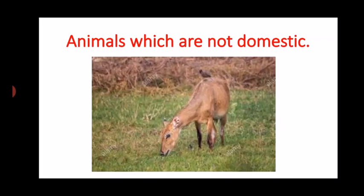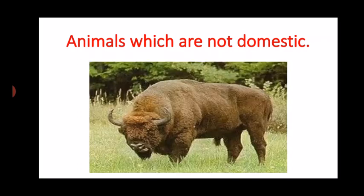Now there is one more animal I want to show you — this is a bison. Look what the bison is eating — the bison is also eating grass. There are many animals like this: milgai, buffaloes, etc., which eat grass and leaves. Sometimes when they do not find grass in the jungles, they slowly get into the fields and start eating crops, and that is when they become a trouble for human beings.